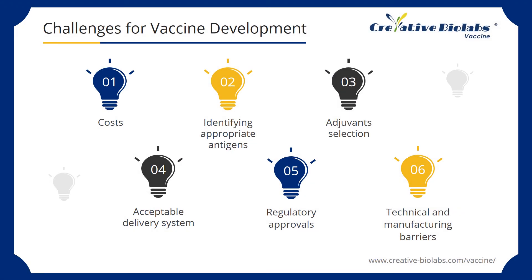Because vaccines are biological products, they are highly regulated. Vaccine research and development has a high risk — on the one hand, it requires a lot of money; on the other hand, vaccine development is carried out in an iterative manner, and only less than one-tenth of vaccines can be successfully licensed. Determining the appropriate antigen is also a major challenge. The uncertainty of antigen and the uncertainty of the human immune system's response to the corresponding antigen will increase the failure rate. Some candidate vaccines may produce an appropriate immune response but cause important adverse reactions, while others may be safe but ineffective in preventing disease. In addition, the type and concentration of adjuvants, acceptable delivery systems, regulatory approvals, technical and manufacturing barriers are also major challenges in vaccine development.